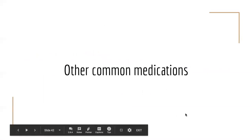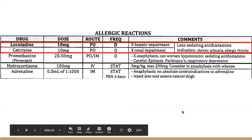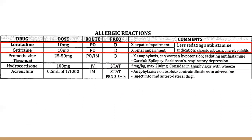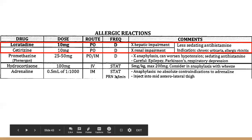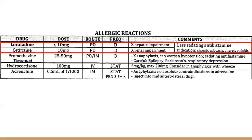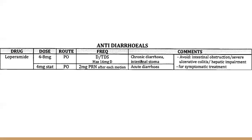Now working through the medication sheet in order. Allergic reactions — for anaphylaxis you're giving adrenaline 0.5mL. For milder reactions like itch, either promethazine or cetirizine work fine as antihistamines; there are considerations around hepatic versus renal impairment for choosing between them. For antidiarrhoeals — as a general rule don't use them, but if someone needs symptomatic relief for a non-infective cause, they're available.